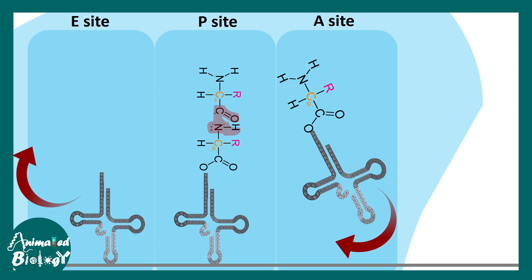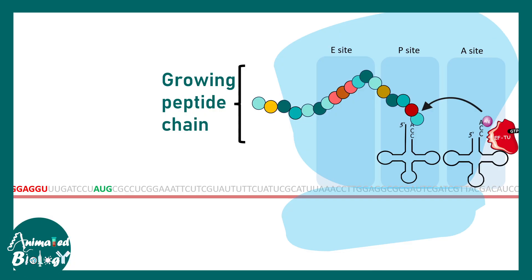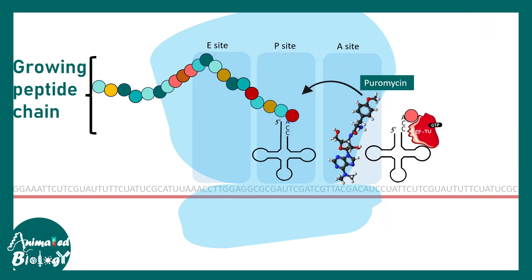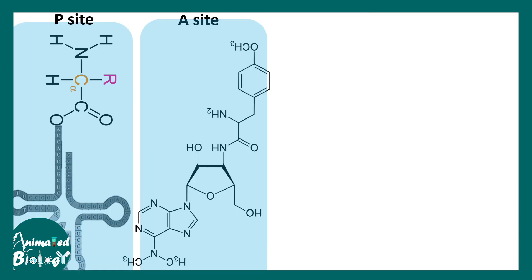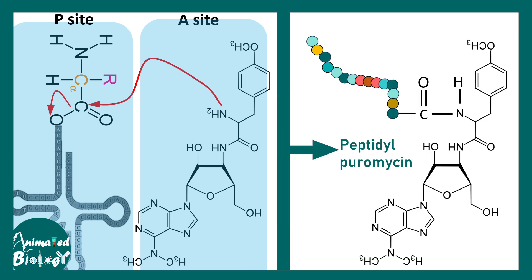Eventually, the peptide chain grows by adding more and more amino acids. When a puromycin molecule enters the A site in this sequence of growing peptide, it can also form a peptide bond with the growing peptide chain, bonding with the existing aminoacyl tRNA and thereby forming a moiety called peptidyl puromycin.